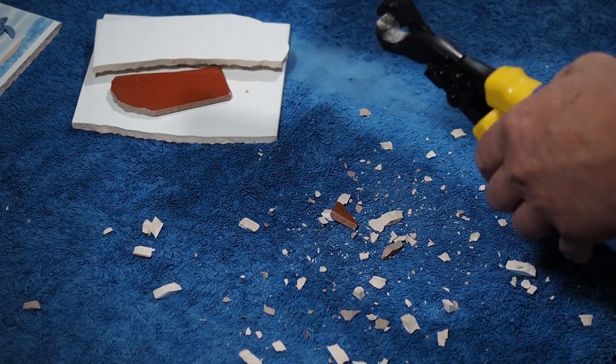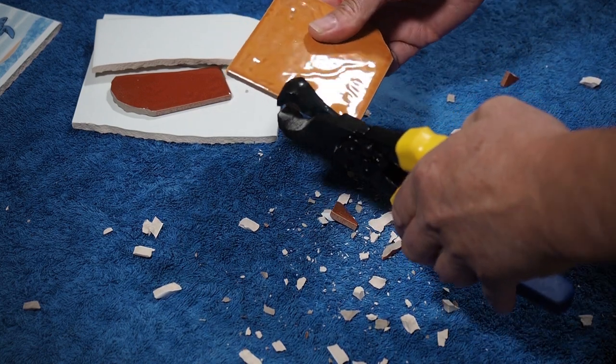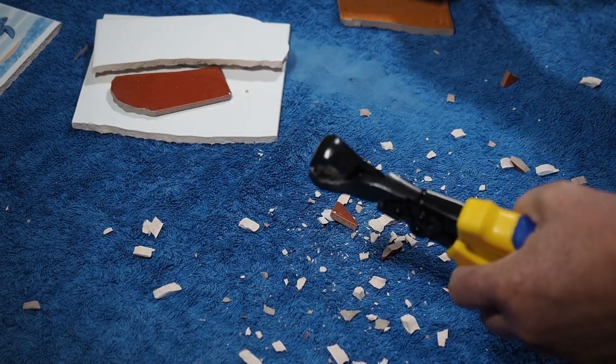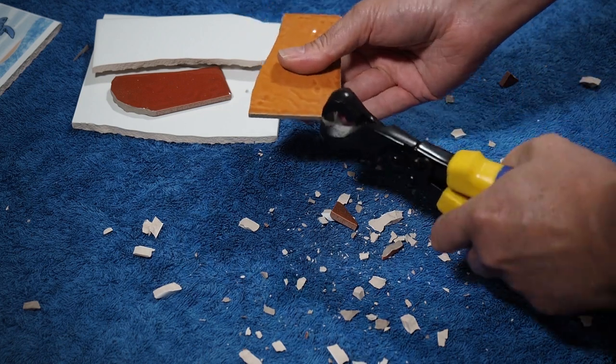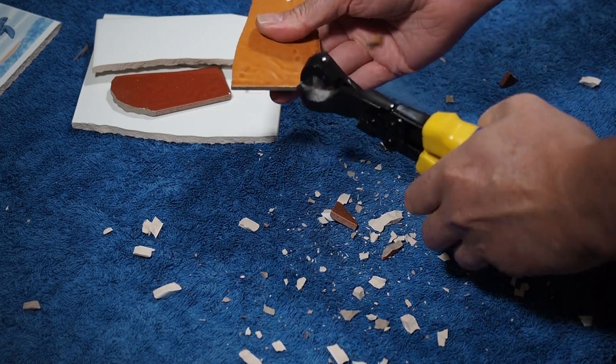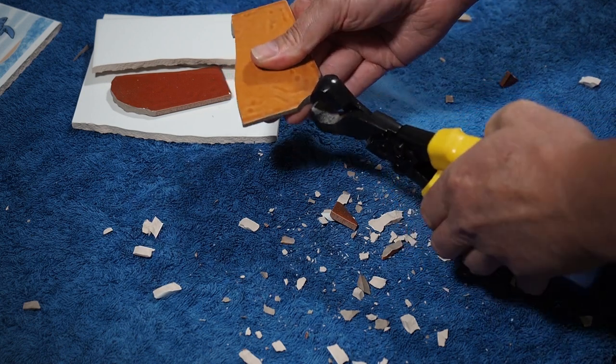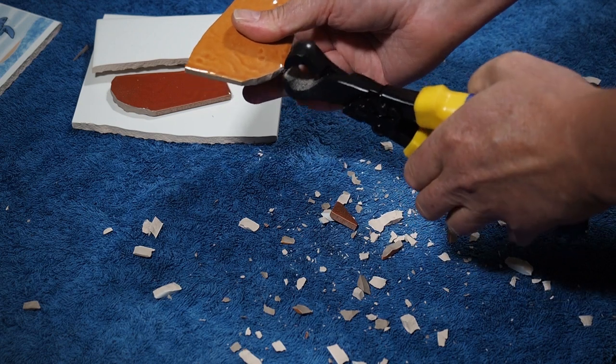Now whether you do small nips or large nips, it's not too bad. We'll give a whirl on this one. Straight cut. That took a lot more effort. So clearly this is a much harder tile. So we'll see how it goes on a shape. Shaping wise it seems to be pretty good on this one as well.